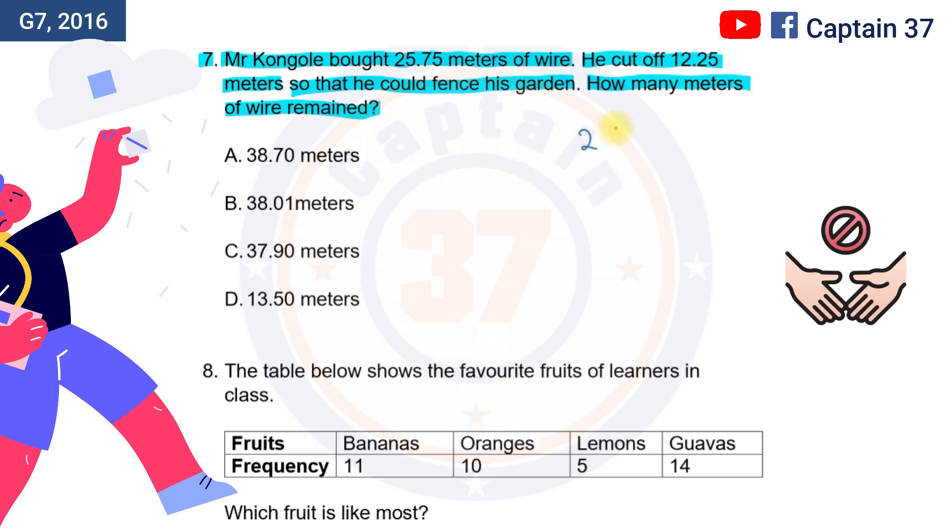He had 25.75, then he cut off from this number of meters 12.25. So we subtract. 5 minus 5 is 0. 7 minus 2 is 5. 5 minus 2 is 3. 2 minus 1 is 1. This is how many meters of wire remained. The answer is 13.5.